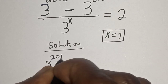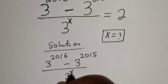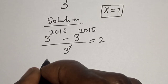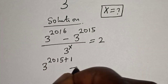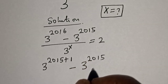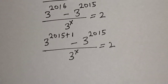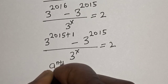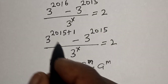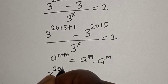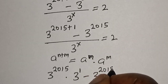3 raised to power 2016 minus 3 raised to power 2015, divided by 3 raised to power s, is equal to 2. This becomes 3 raised to power 2015 plus 1, minus 3 raised to power 2015, divided by 3 raised to power s, equals 2. Remember the rule: a raised to power n plus m equals a raised to power n multiplied by a raised to power m. So this becomes 3 raised to power 2015 multiplied by 3 raised to power 1.